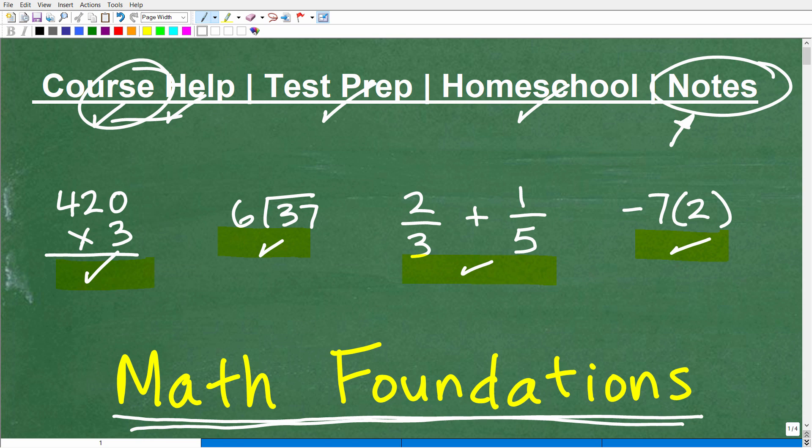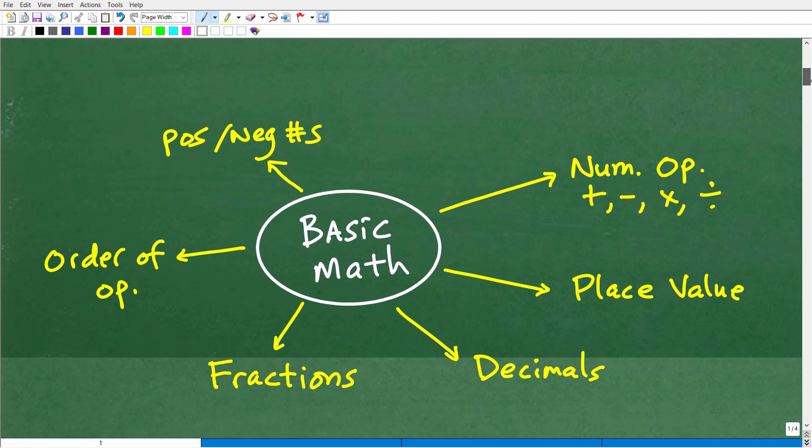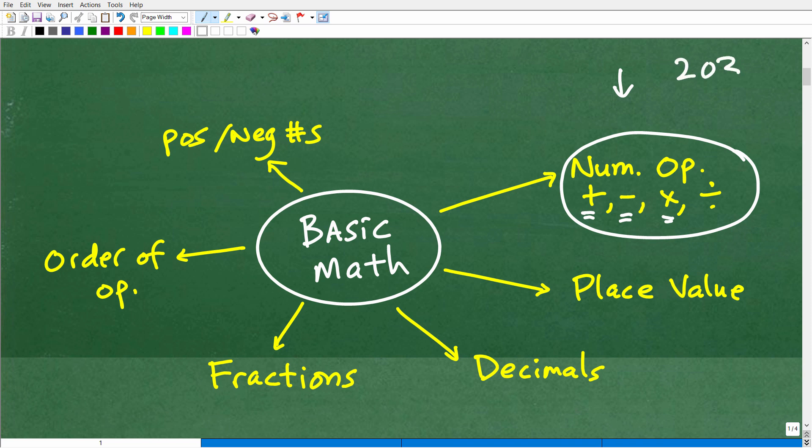So, let's get into basic math skills that every adult should have. The first thing is number operations. Everybody should be able to have basic arithmetic skills. You should be able to add numbers, subtract, all without the aid of a calculator. Now, you should know how to use a calculator as well. But I'm talking about good old-fashioned arithmetic, pencil and paper.